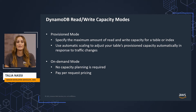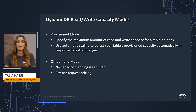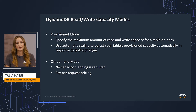This helps govern your DynamoDB use to stay at or below a defined request rate to obtain cost predictability. Provisioned mode is a good option if you have predictable application traffic or you run applications whose traffic is consistent or ramps gradually.